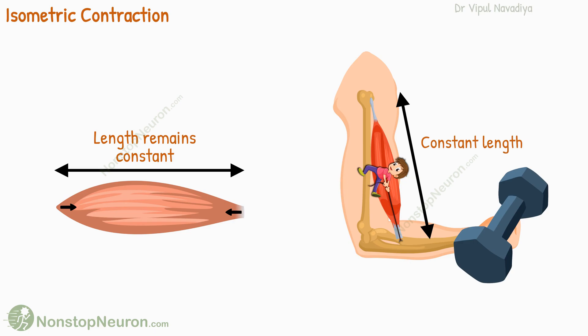As you can understand from the example, isometric contractions are useful for maintaining posture and joint stability. In simple words, they help you maintain a stable position. So this was an isometric contraction.